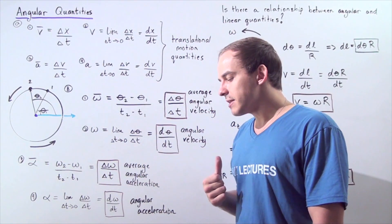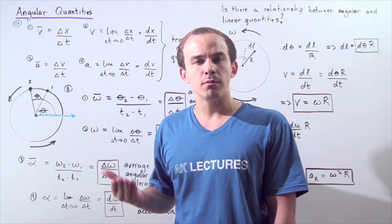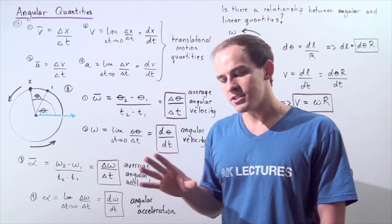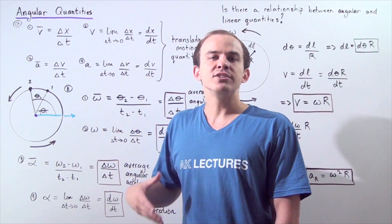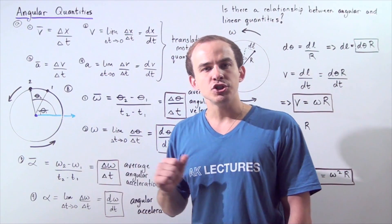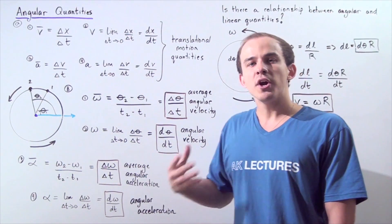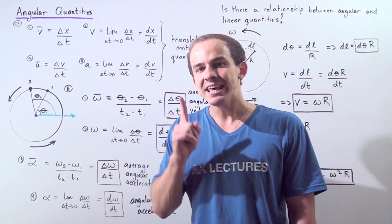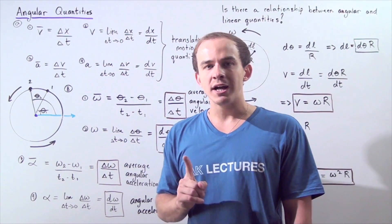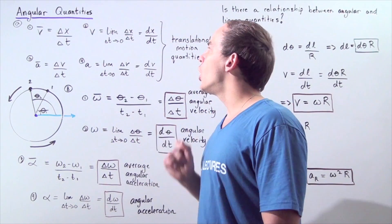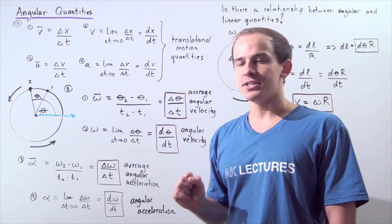We now begin our discussion on angular and rotational motion. This is a different type of motion than translational motion, and that means we're going to deal with different but analogous quantities known as angular or rotational quantities.